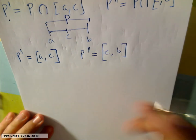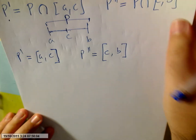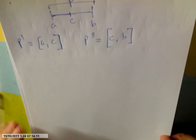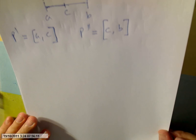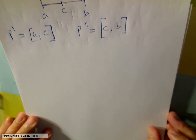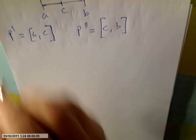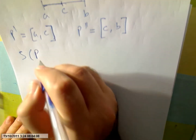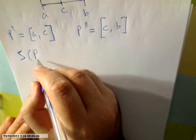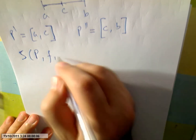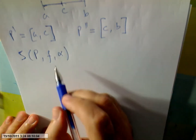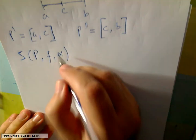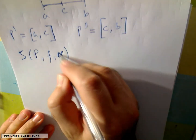The Riemann-Stieltjes sums for these parts of the partitions are connected by an equation. So the Riemann-Stieltjes sum of the partition of the function F with respect to α...